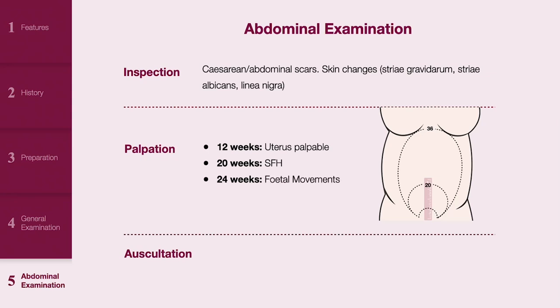From 24 weeks, generally feel for any fetal movements, abdominal tenderness or guarding, then palpate the gravid abdomen. From 34 weeks, determine the fetal lie, fetal presentation and level of engagement using the four Leopold's manoeuvres.